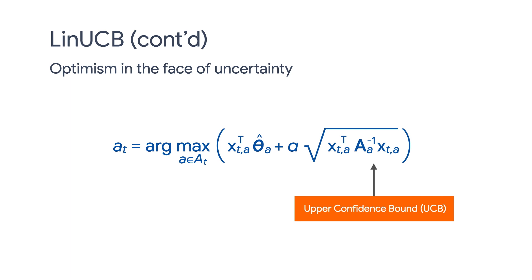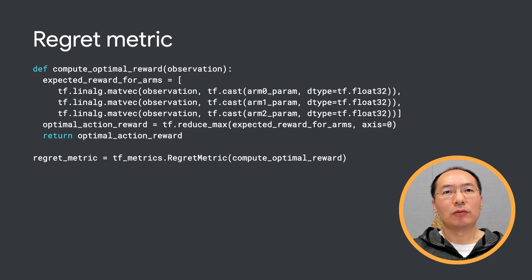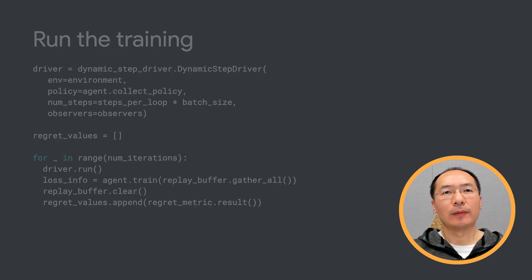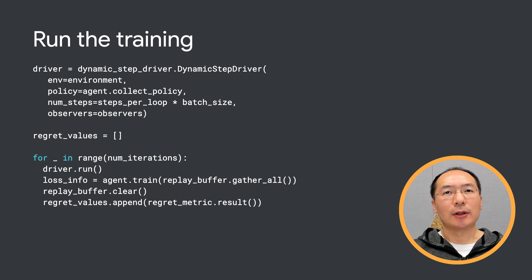You can read more about linear UCB in the original paper from Yahoo. We already mentioned regret in our A/B test example. Regret is a key metric in the MAB setting. Here, we are just setting up the regret metric with the optimal reward. Unlike our previous episodes in which we used Reverb replay buffer, we are going to use the bandit replay buffer this time. Next, we run the training loop using the dynamic step driver. This is very much similar to our previous reinforcement learning examples.